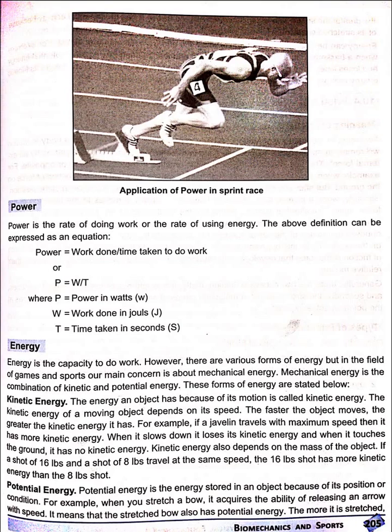Potential energy is the energy stored in an object because of its position or condition. For example, when you stretch a bow, it acquires the ability to release an arrow with speed. It means that the stretched bow has potential energy.